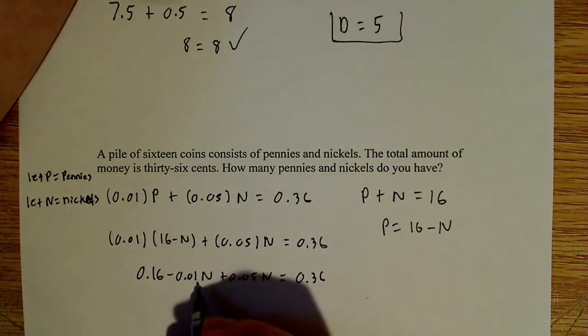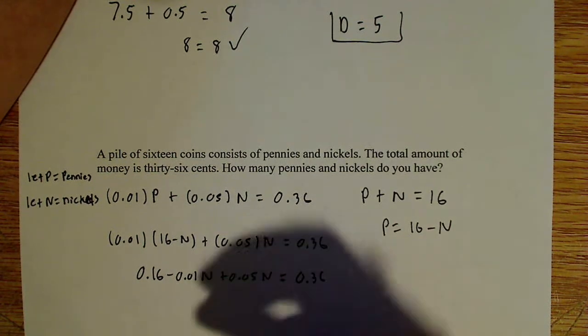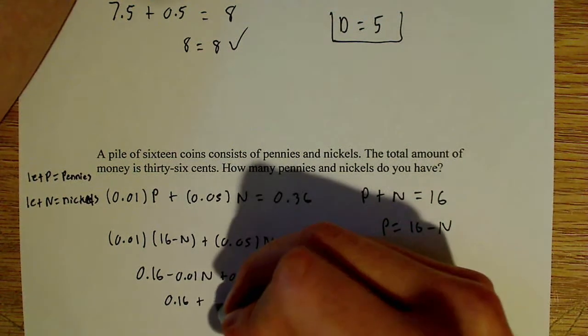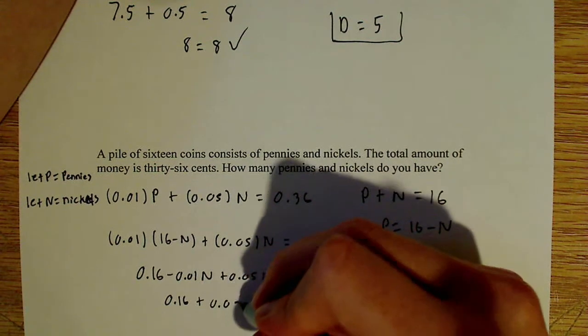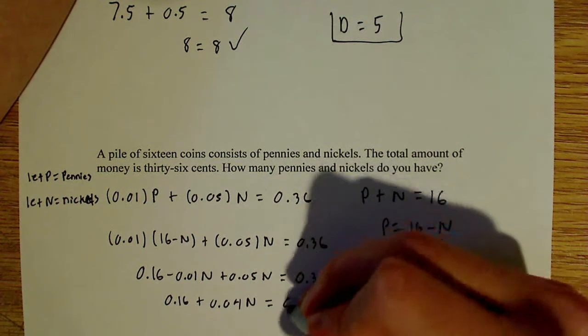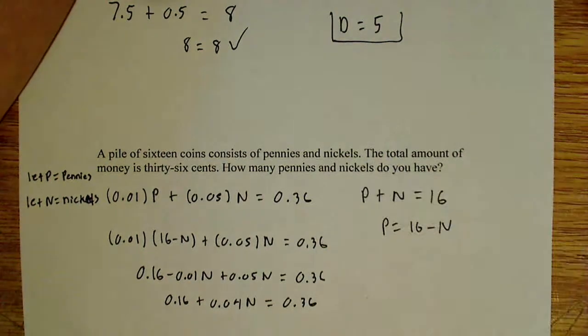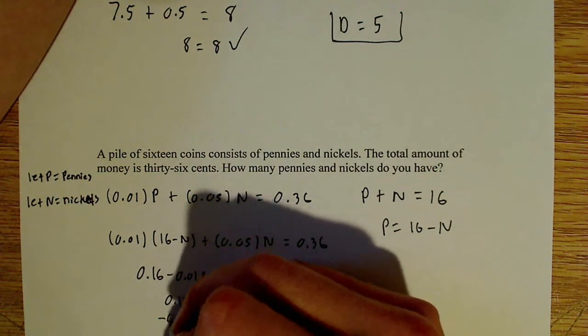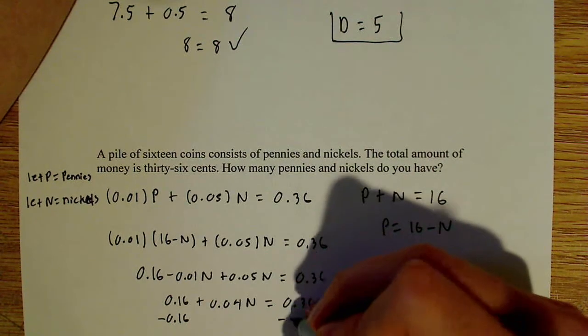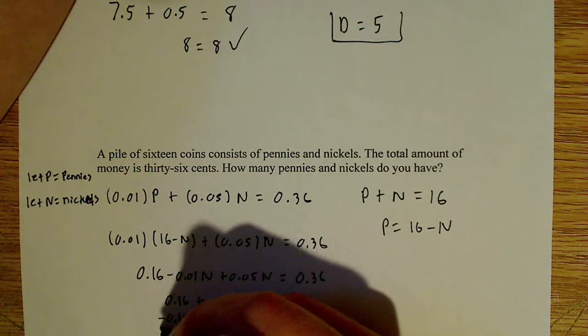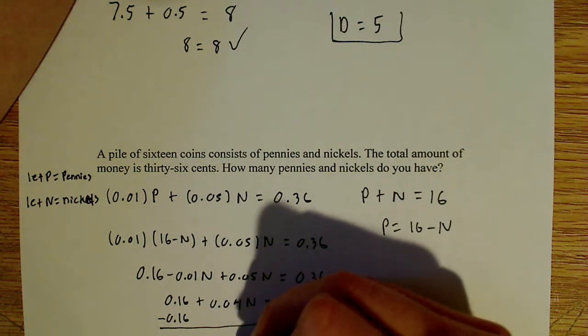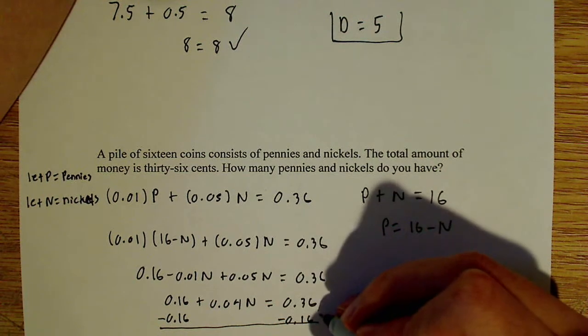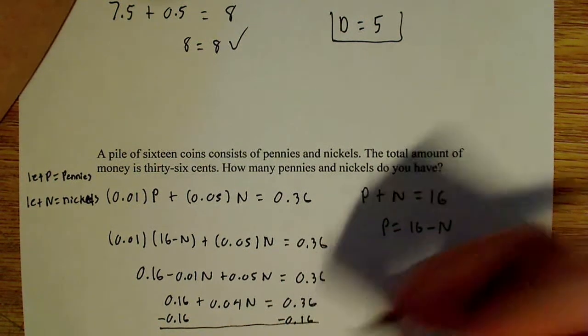Now we can combine these two terms here. So that gives us 0.16, and that's going to be plus 0.04 N is equal to 0.36. And now that we have that, we can simply subtract 0.16 from both sides, and what that gives us is 0.04 N is equal to 0.20.